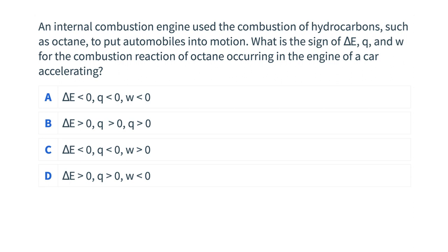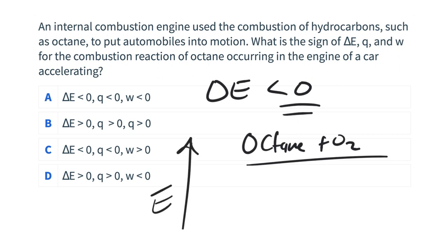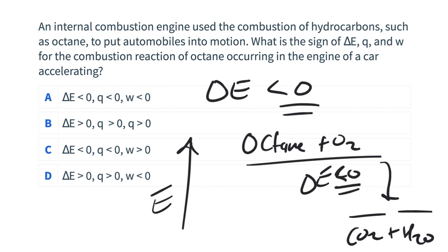We have an internal combustion engine with the combustion of hydrocarbons such as octane. You have the burning of a hydrocarbon, and that information tells us a reaction where delta E has to be less than zero — energy is coming off this reaction. This is like octane plus O2 molecules having higher relative energy than the products CO2 and water. The sum of the CO2 and water molecule energies would be lower than that of octane plus O2 — that's where the energy comes from.